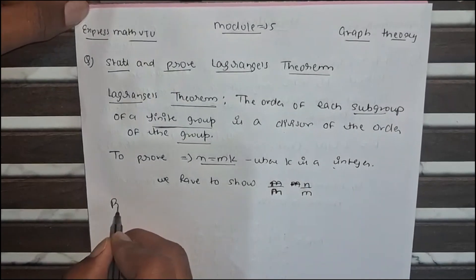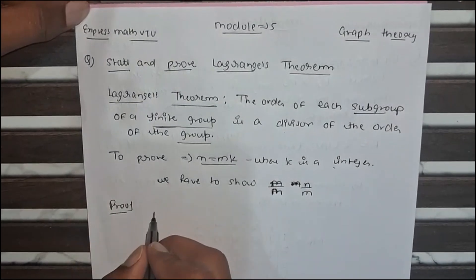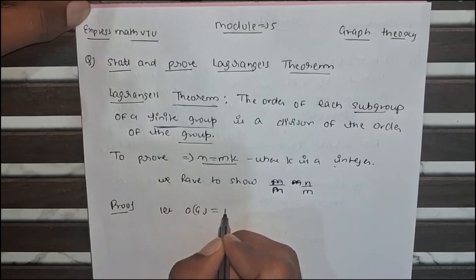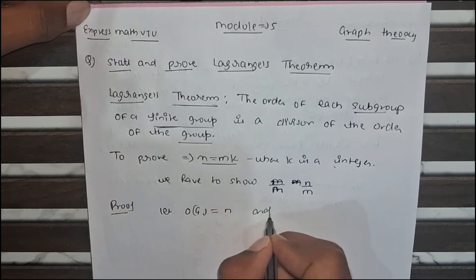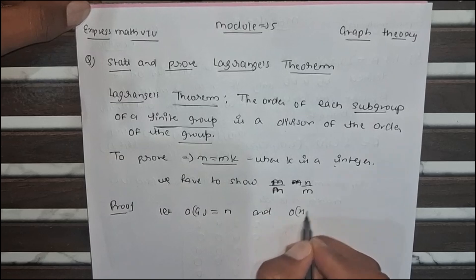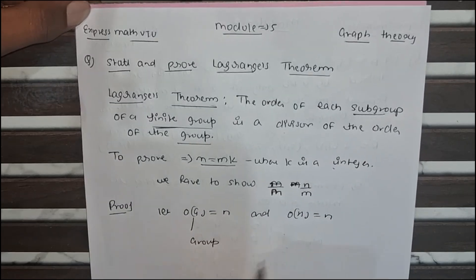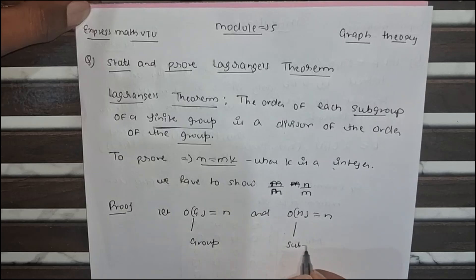Let order of g equals n and order of h equals n. This is the order of group and this is the order of subgroup.